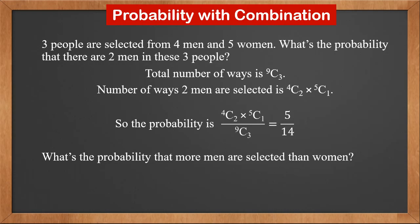2 men 1 woman is already calculated above. 3 men is 4C3. So the probability is 4C2 times 5C1 plus 4C3 over 9C3. The result is 17 over 42.